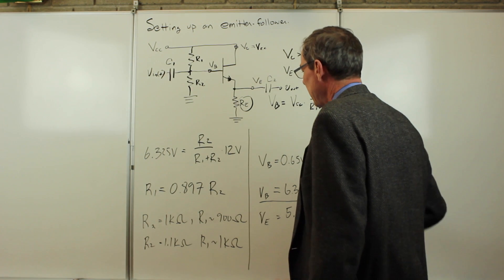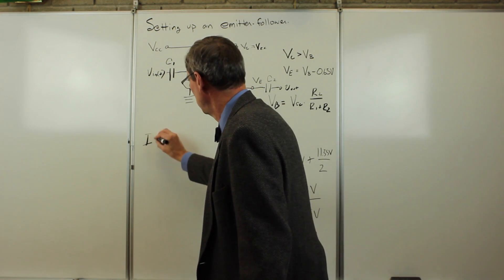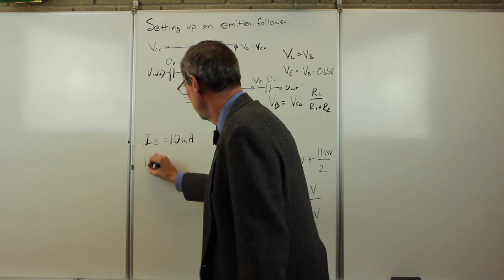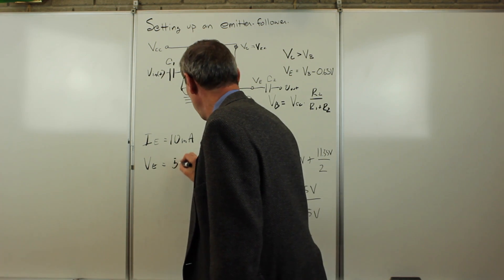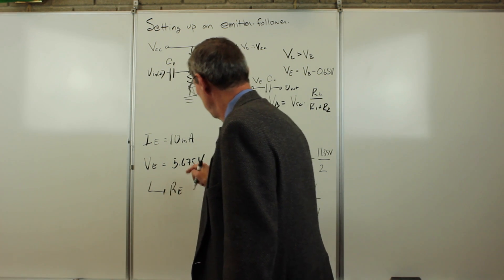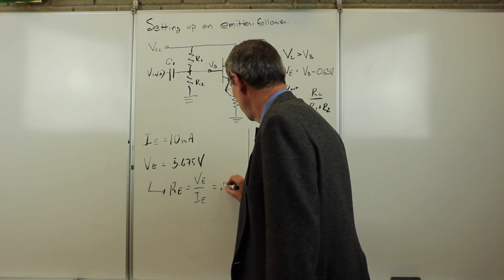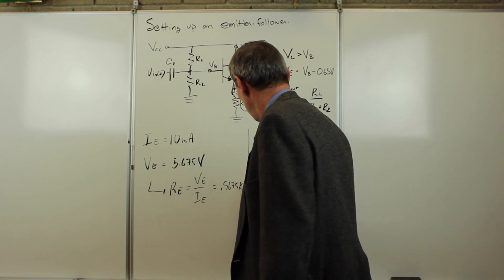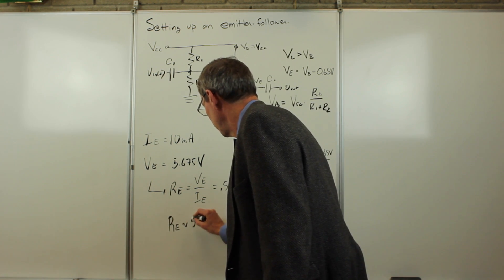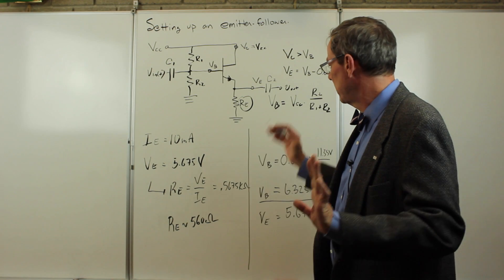In order to do that, we'll try to choose IE to be 10 milliamps. IE is 10 milliamps, the emitter voltage VE is 5.675 volts. That says RE is basically VE over IE equals 0.5675 kiloohms, so it's about 600 ohms. So we want to choose RE about 560 ohms or so. That's going to limit the current to about 10 milliamps, so that's very safe there.